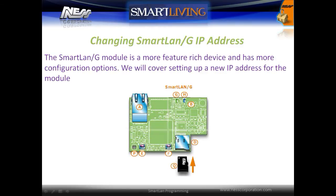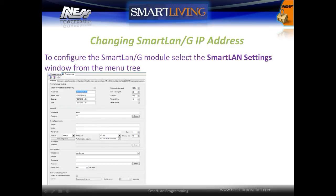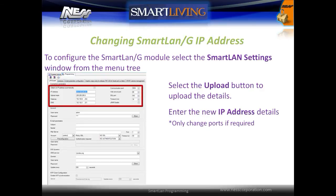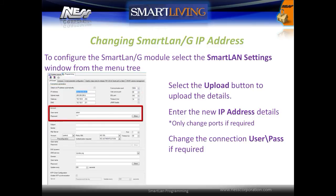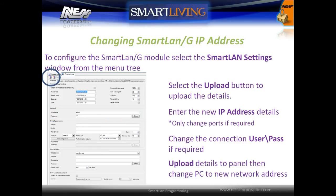The Smart LAN G module is a more feature-rich device with more configuration options. We will cover setting up the IP address for the module. To configure the Smart LAN G module, select the Smart LAN Settings window from the menu tree. Upload the module details from the panel to the software. Enter the new IP address details and only change ports if required. Change the connection username and password if required, then send the details to the panel and change the PC to the new network address if required.